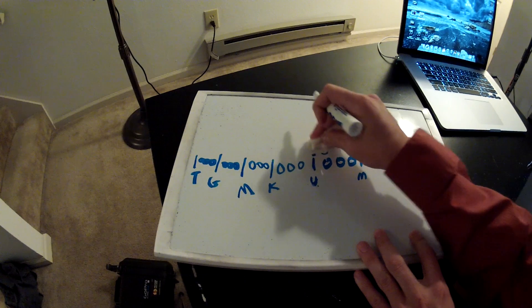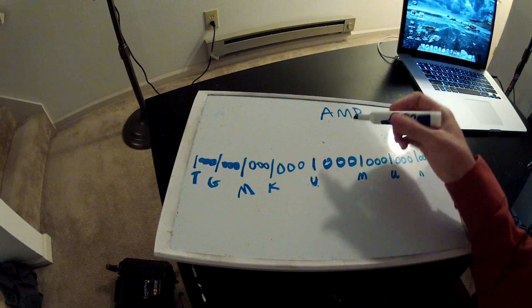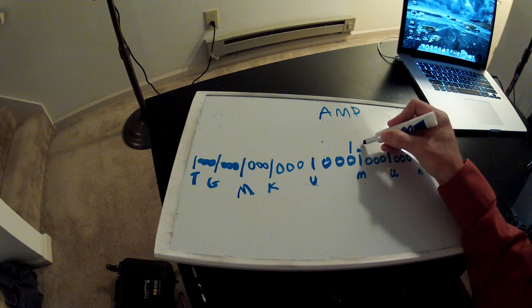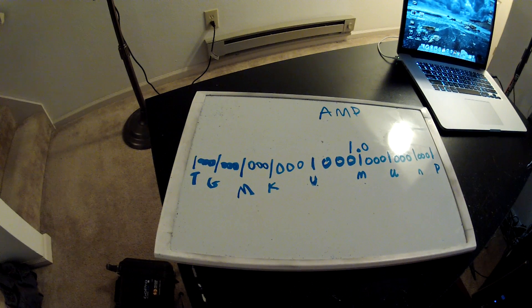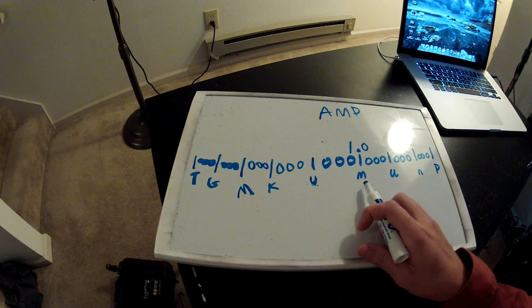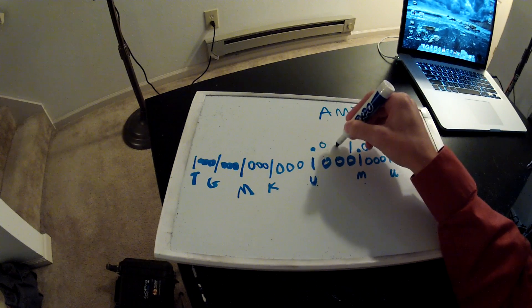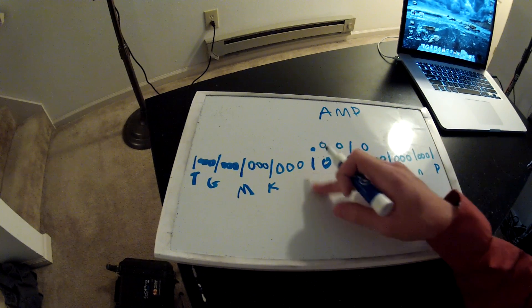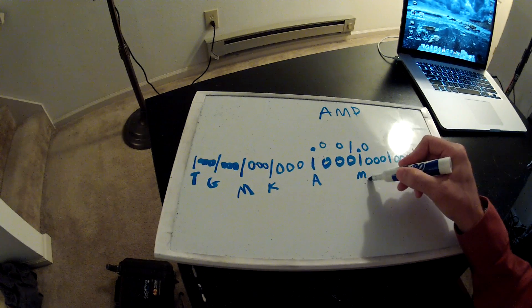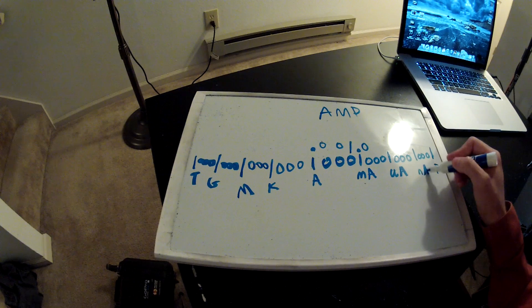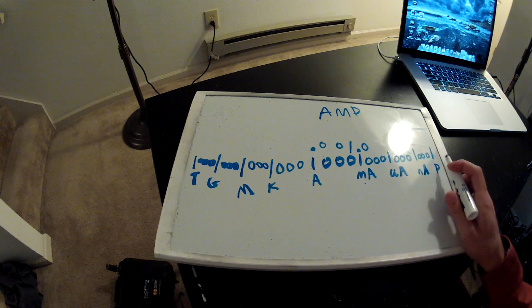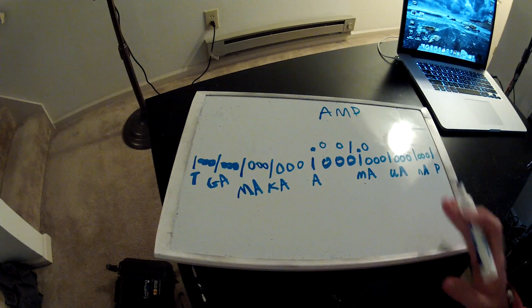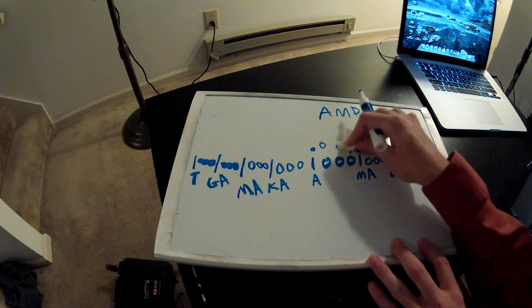For a milliamp, you come down three zeros to the right to the milli position and place your one milliamp there. So one milliamp equals 0.001 amps. You can do the same with microamp, nanoamp, picoamp, kiloamp, megaamp, or gigaamp — you can move in either direction.